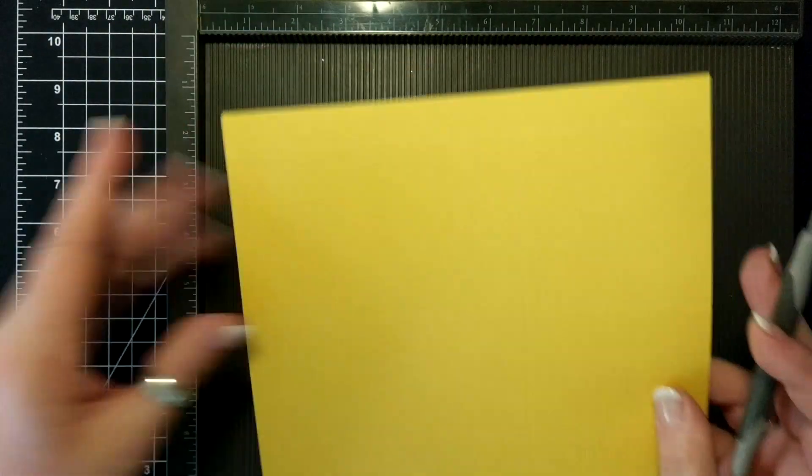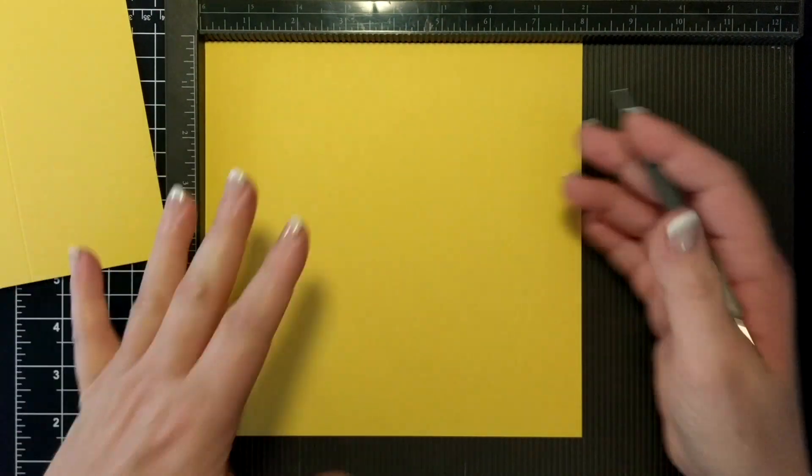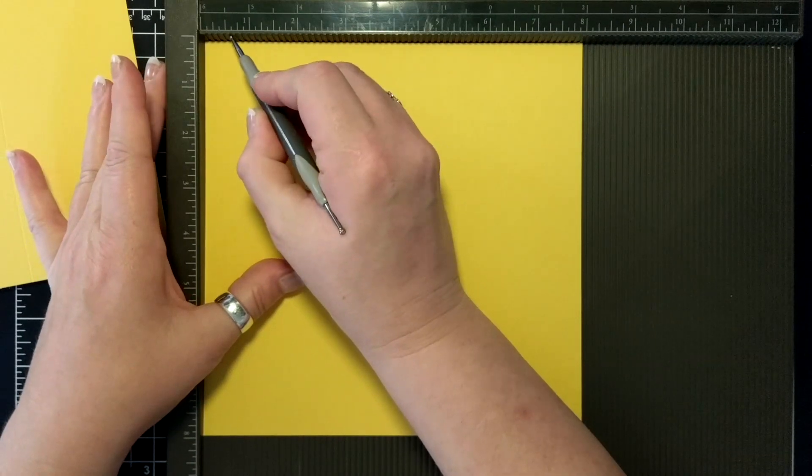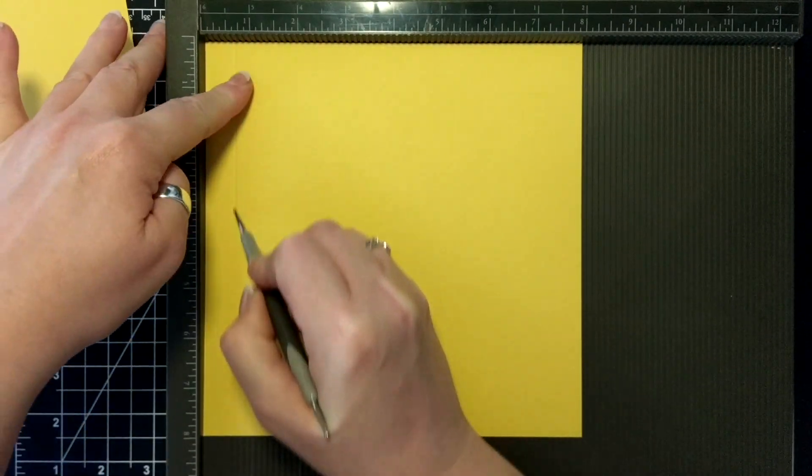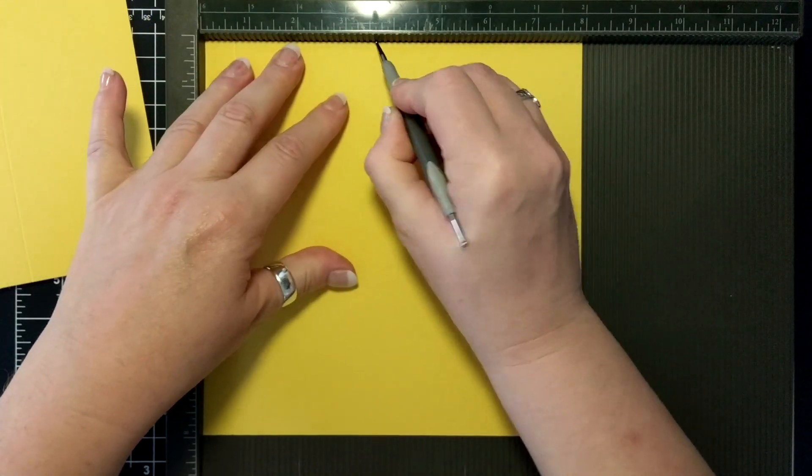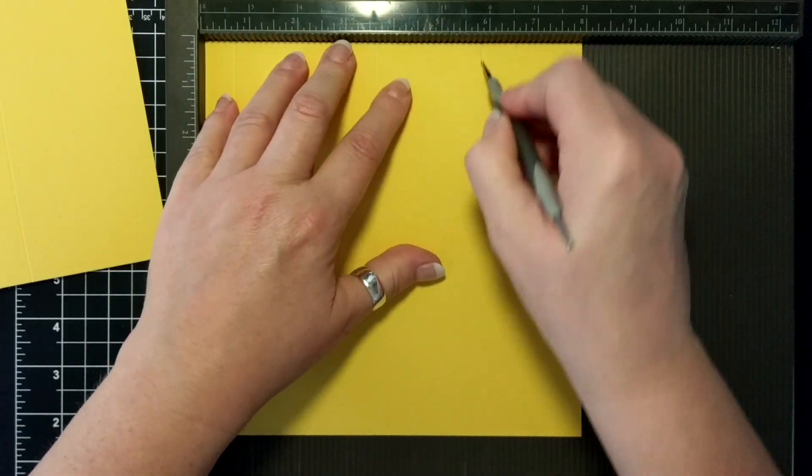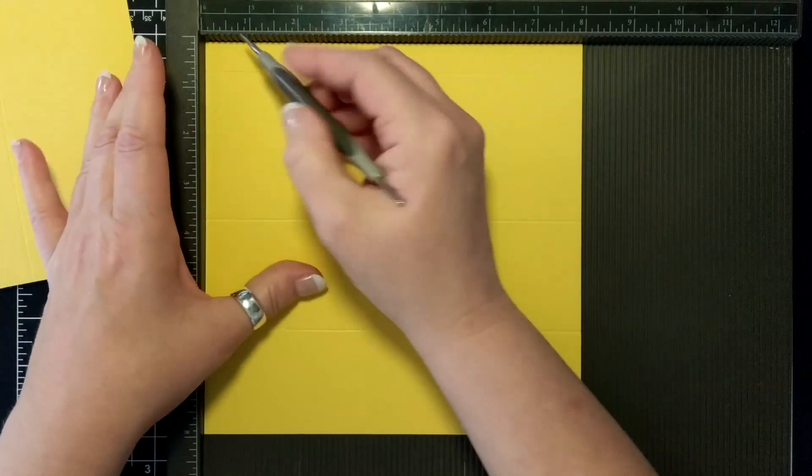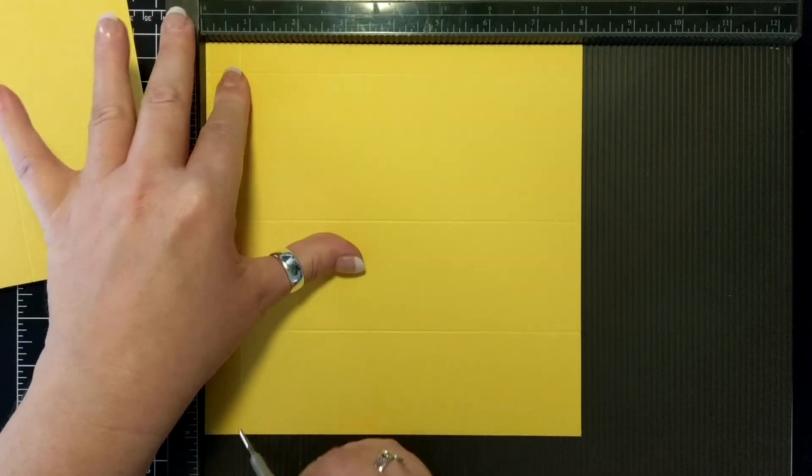And then we have to do the exact same thing on the other one. And because it's square, it doesn't matter where you start. So 5 eighths, 3 and 5 eighths, and 5 and 7 eighths. Flip it around 3 quarters of an inch and 5.